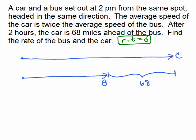So, the picture is the car is going to get ahead and how far ahead, 68 miles. So, if the bus only went this far, there's another 68 miles left from where it ends to where the car is. So, that's our picture.